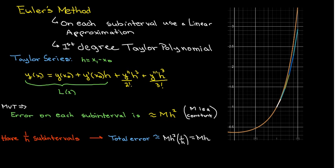So the total error, well you have to realize that you have capital N sub-intervals or 1 over h sub-intervals, so you're going to have to take the error from one sub-interval, multiply it times the number of sub-intervals, and that's why the total error is proportional to h.